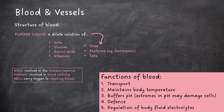Blood has multiple useful functions: it is involved in transport, helps maintain body temperature, buffers pH, helps the body defend against pathogens, and is also involved in the regulation of body fluid electrolytes.